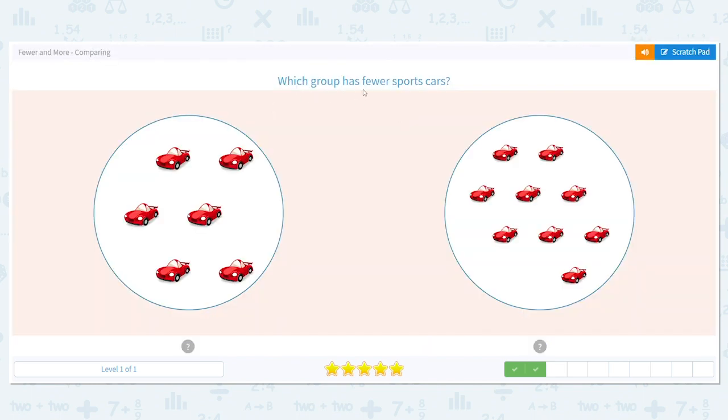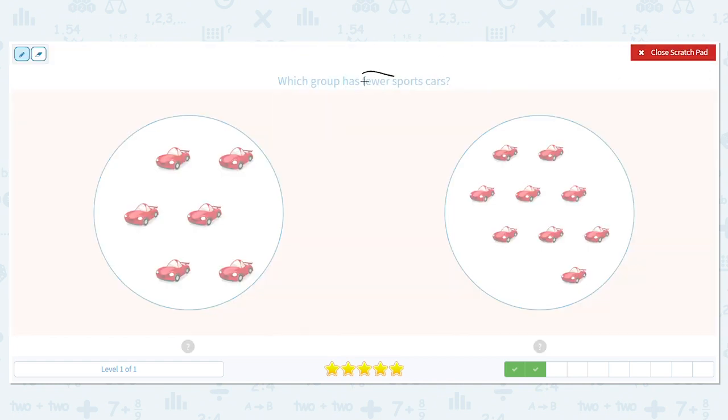Which group has fewer sports cars? I'm going to circle fewer because what does fewer mean? Lower. All right, let's count our first group. Count with me. One, two, three, four, five, six. We have six.